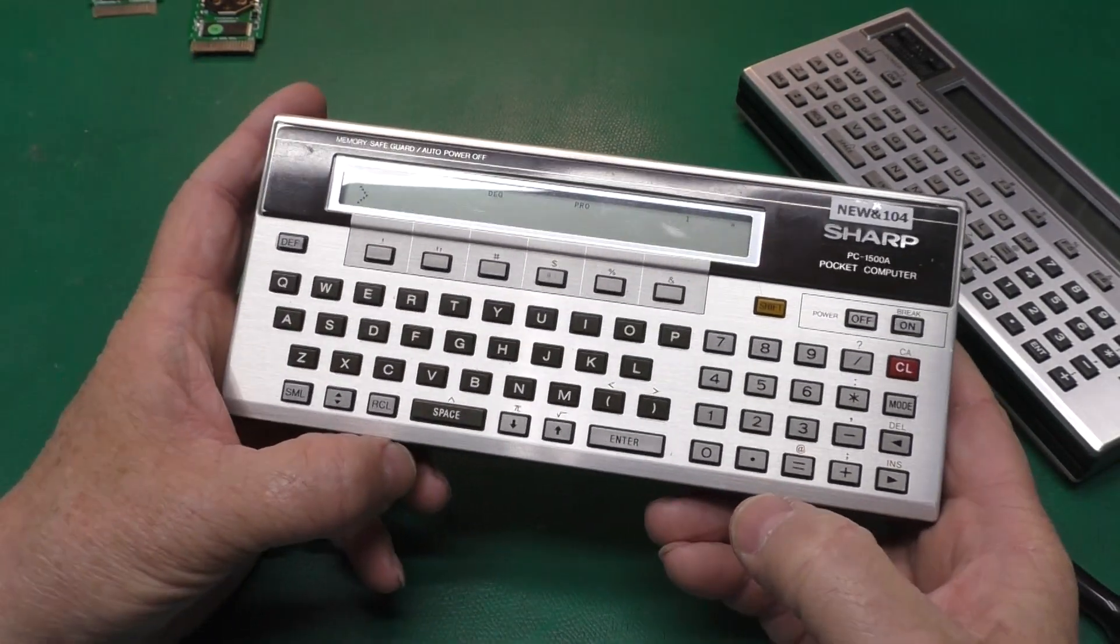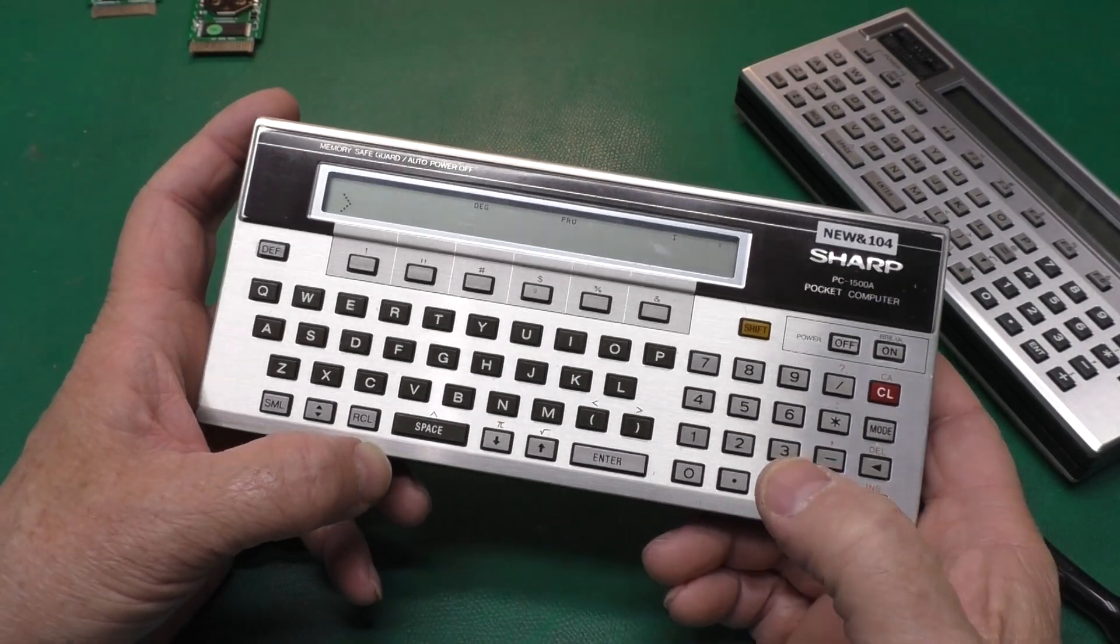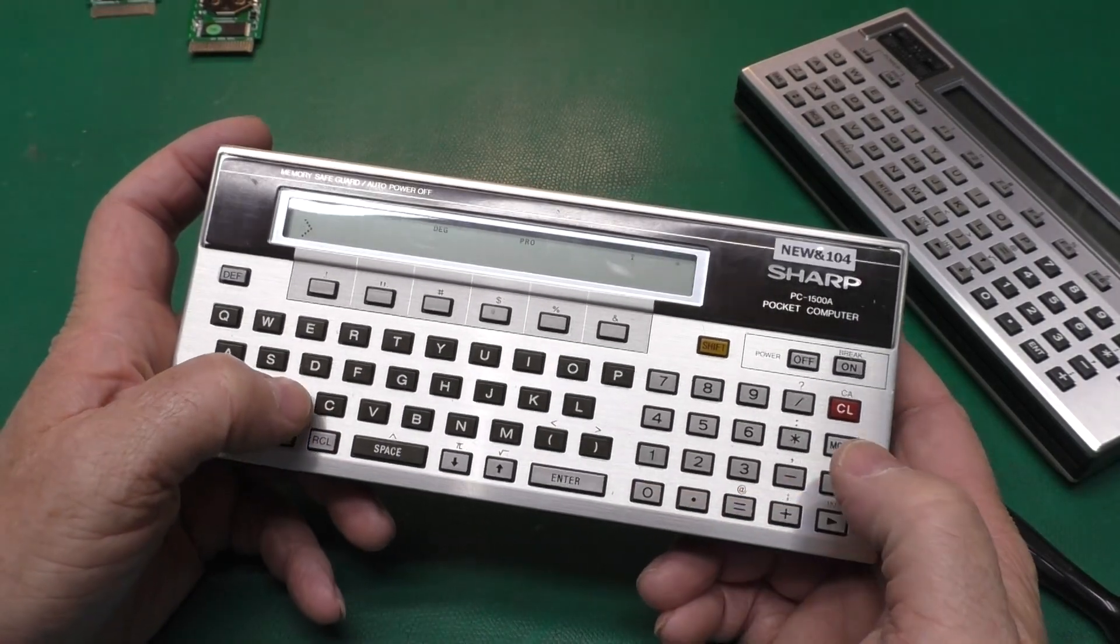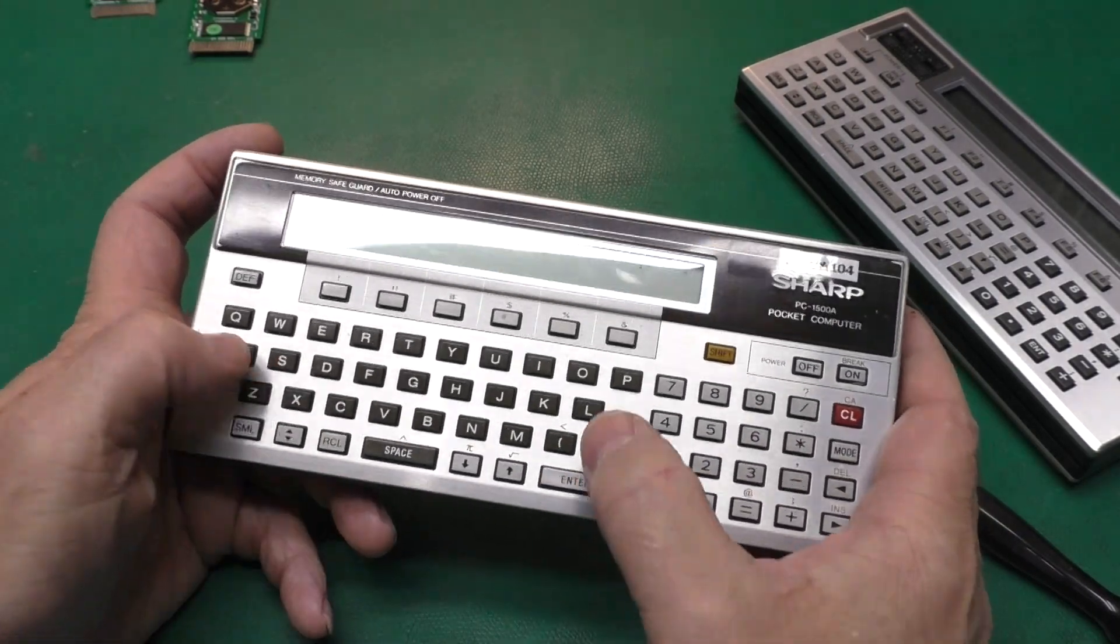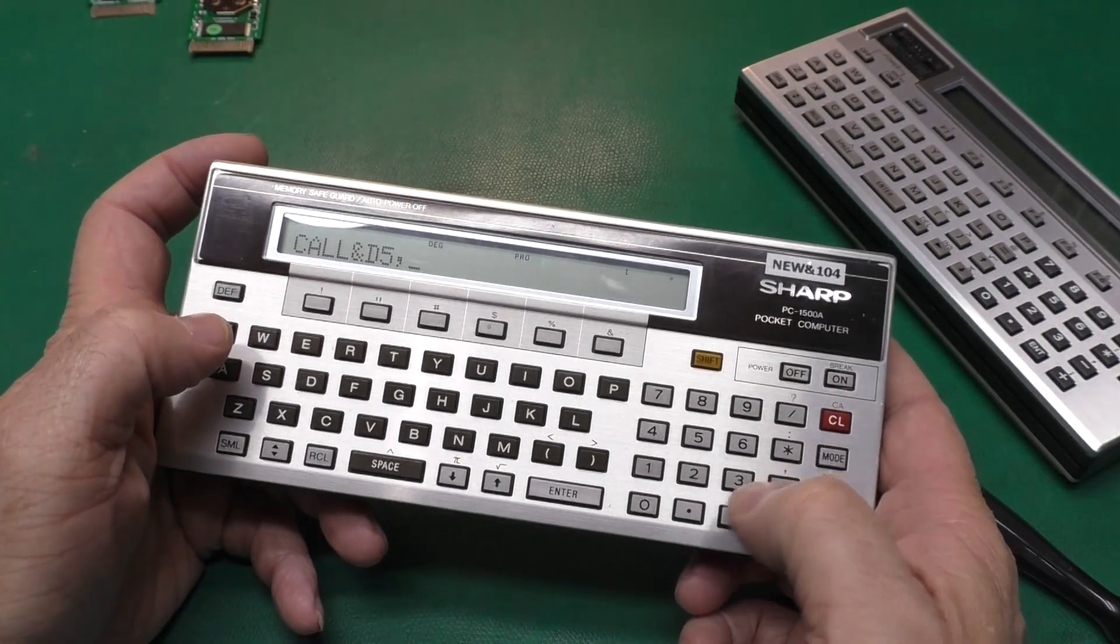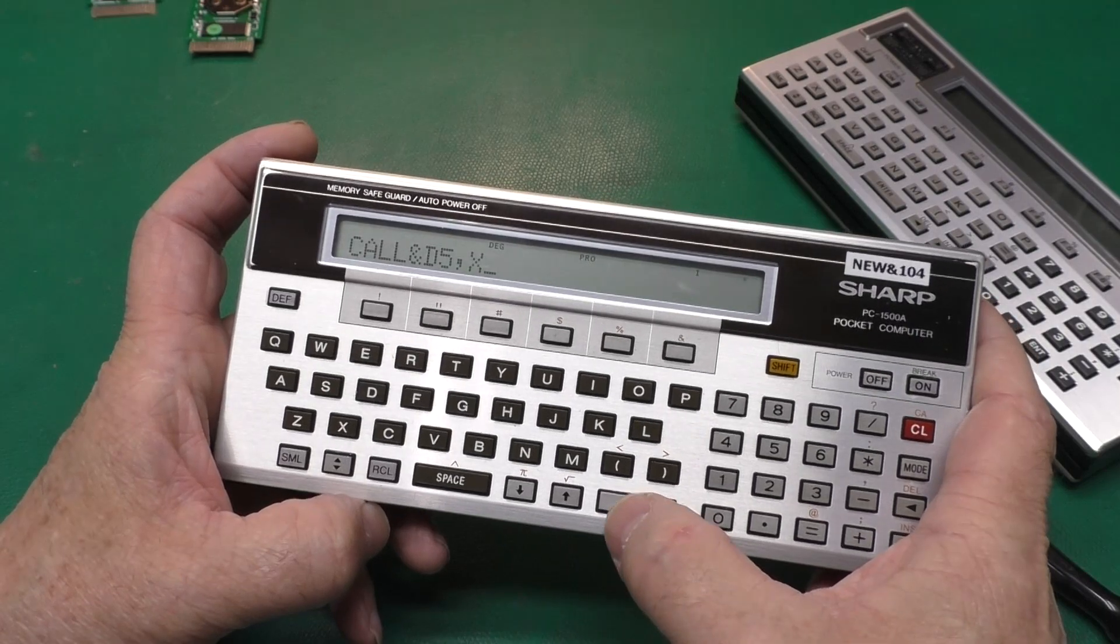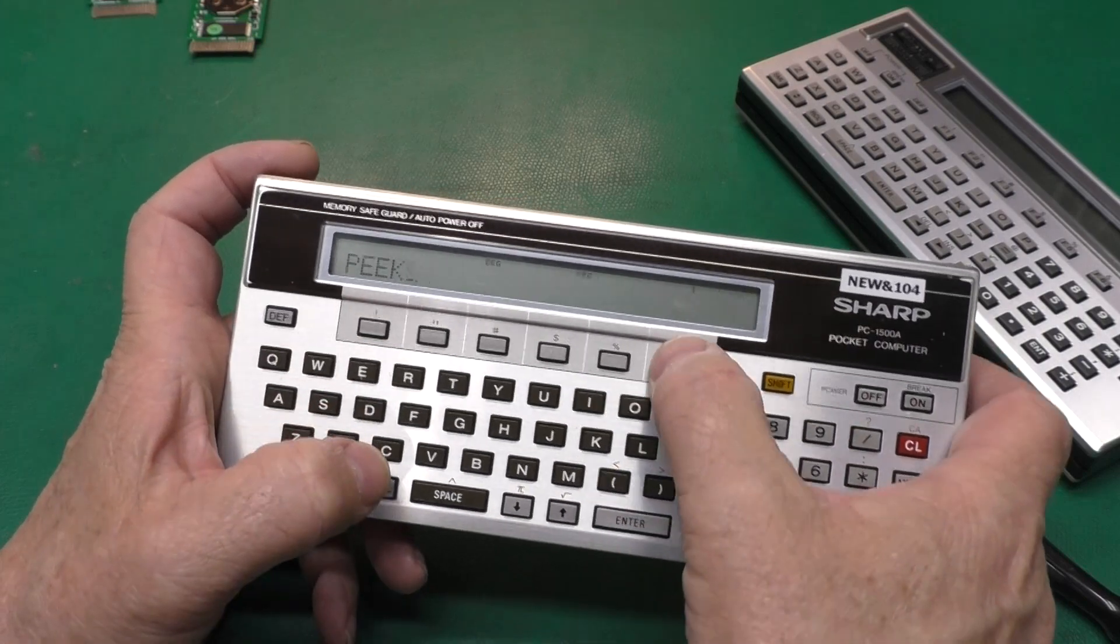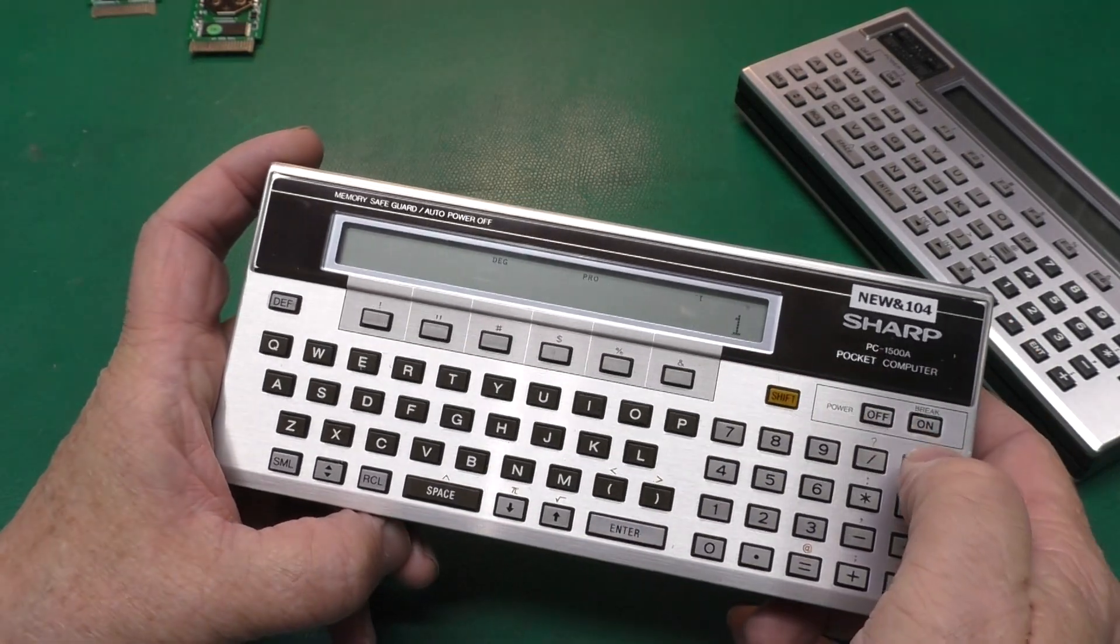On this guy to switch banks, it's the same process with a slightly different call address as for the flash module. We'll say x equals 1, call at d5, comma, x. And we can check which bank we're at by doing peak d4. We're on bank one.